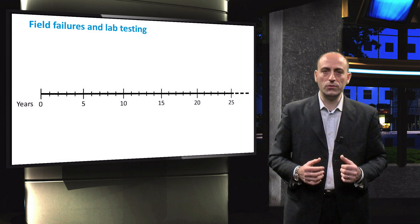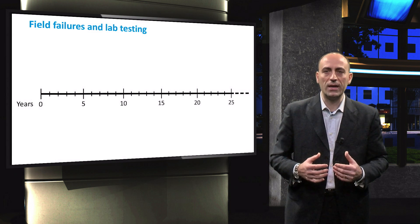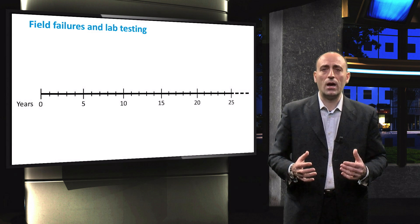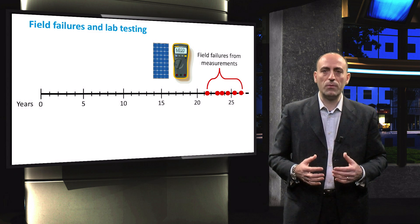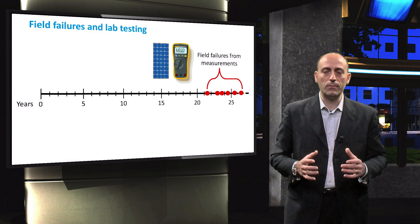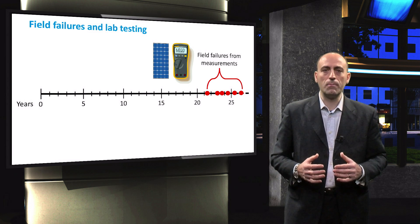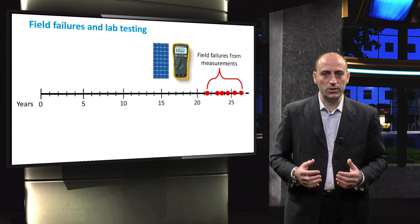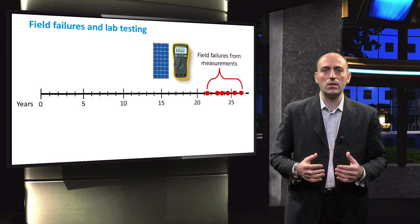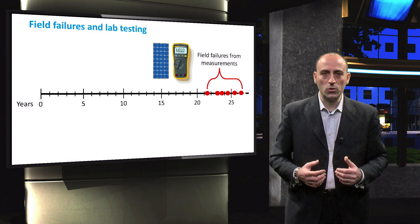Possibly the most accurate way to determine the long-term performance, reliability, and failure mechanisms is by actual outdoor performance data. However, good quality field data of PV system performance throughout its lifetime is limited. Additionally, generating field data takes many years. By the end of the lifetime of the modules under test, the technology on the market might have already changed. Consequently, the results of the field tests might not be applicable to the current PV modules on the market.